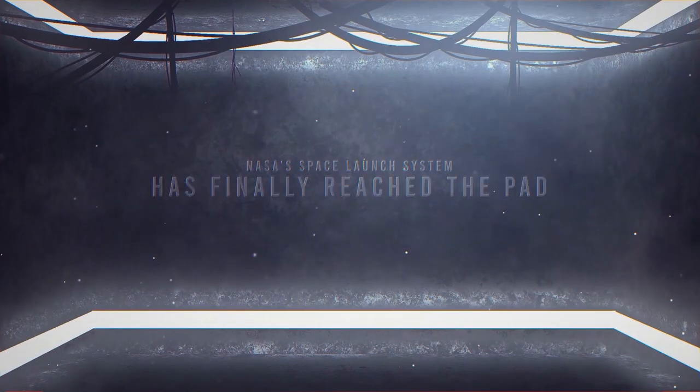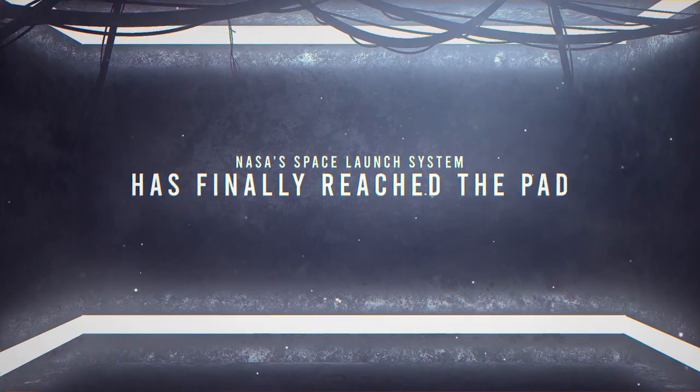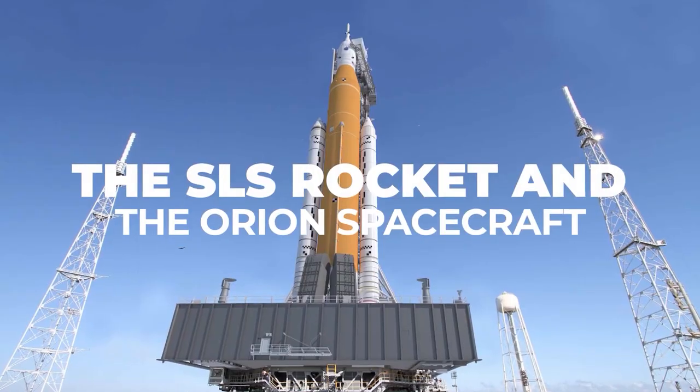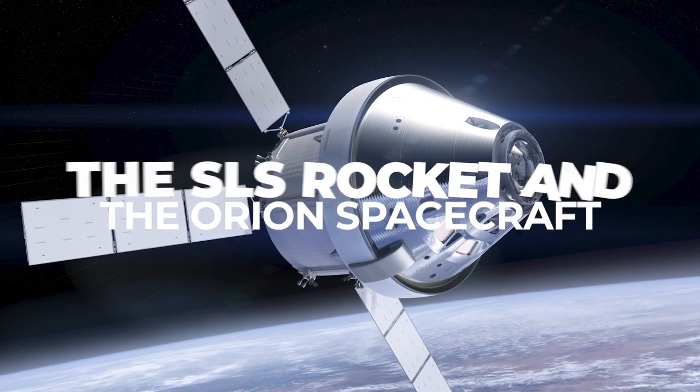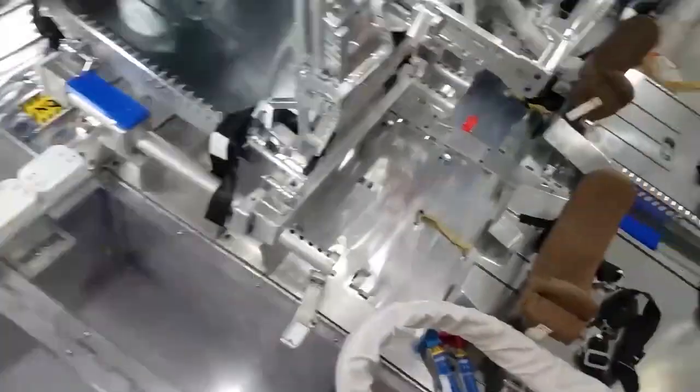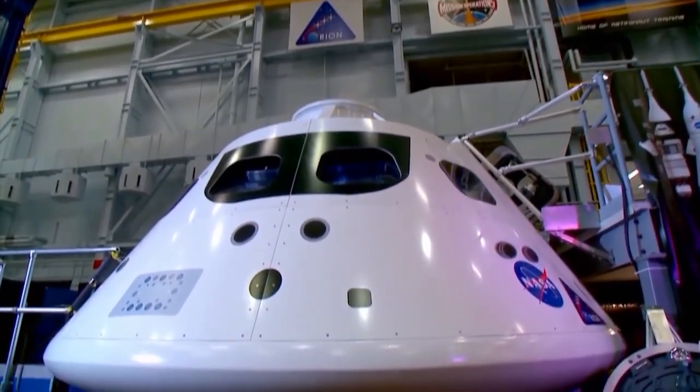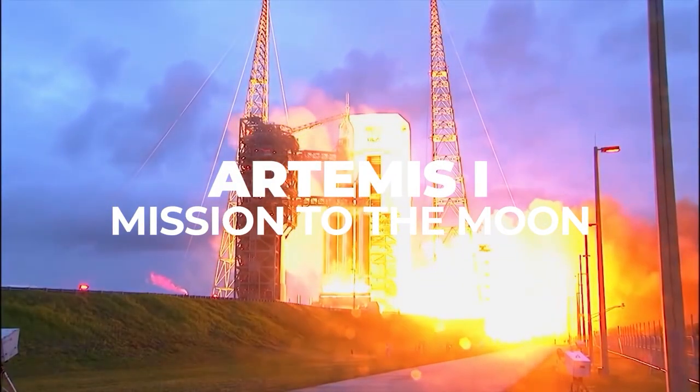Moreover, NASA's space launch system has finally reached the pad, although an actual launch is still some ways off. The SLS rockets and the Orion spacecraft arrived at Kennedy Space Center's launch pad 39B for the first time on March 18 for one last test before the delayed and uncrewed Artemis 1 mission to the moon.